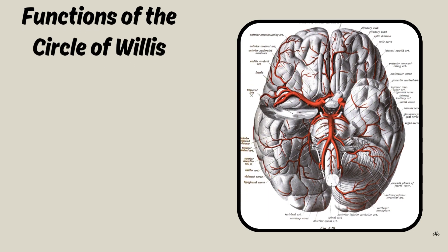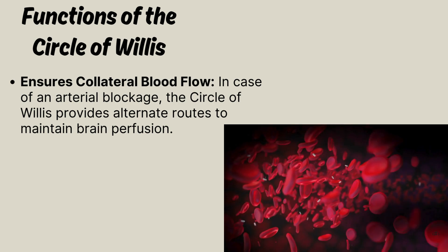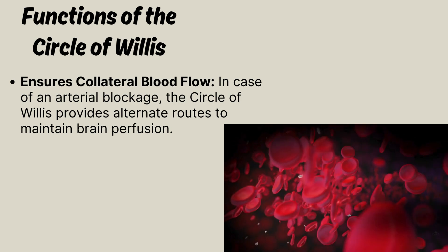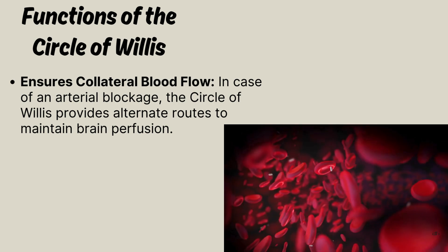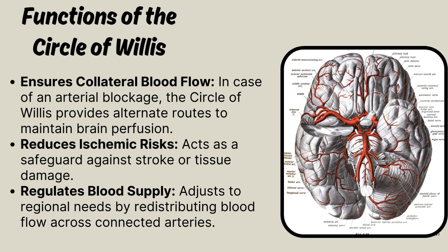The Circle of Willis performs the following functions: it ensures collateral blood flow in case of an arterial blockage by providing alternate routes to maintain brain perfusion; it reduces ischemic risks, acting as a safeguard against stroke or tissue damage; and it regulates blood supply by adjusting to regional needs and redistributing blood flow across connected arteries.